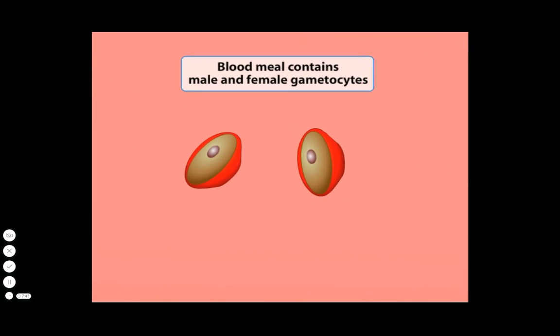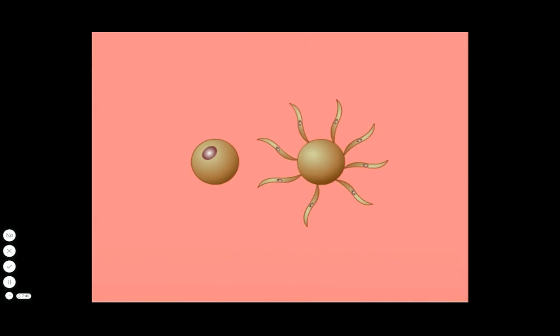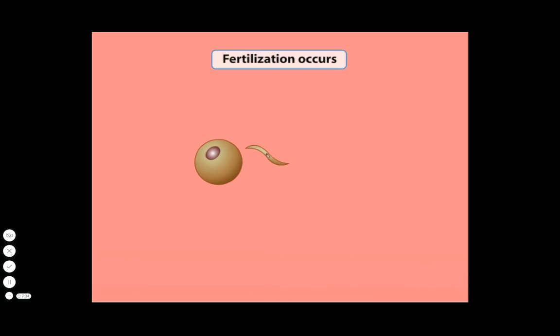In the mosquito's gut, the gametocytes escape from the red blood cells and develop into male and female sex cells called gametes. A male and a female gamete fuse to produce the first cell of the next generation, the zygote.